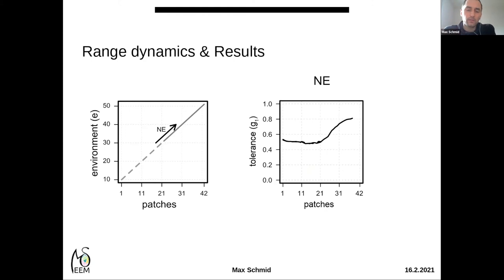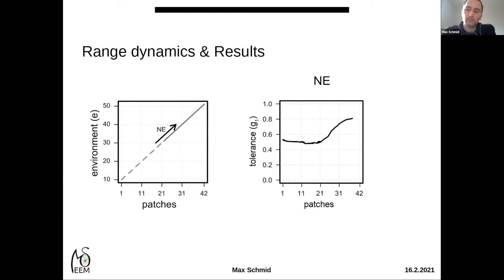The species solved this problem by evolving higher tolerance at the expansion front. In the right graph, you can see the tolerance level evolving within each population across patches. In the left patches, there are uniform tolerance levels across the 21 occupied patches, but in the range expansion part there is an elevated tolerance level. Populations had to adapt to novel conditions by evolving higher tolerance levels. So in the niche expansion scenario, higher tolerance evolved at the expansion front.